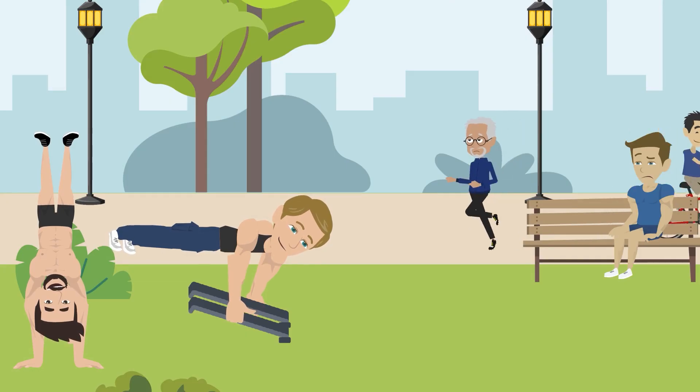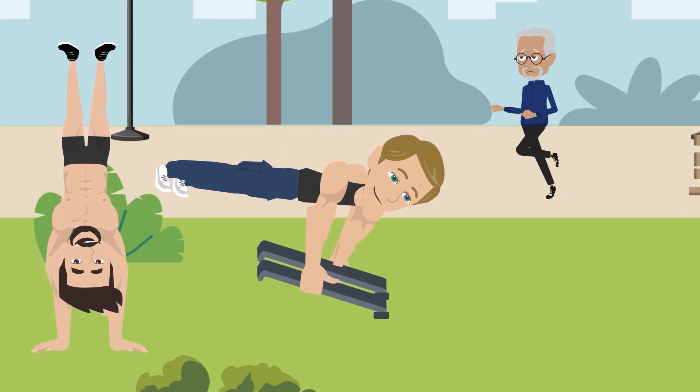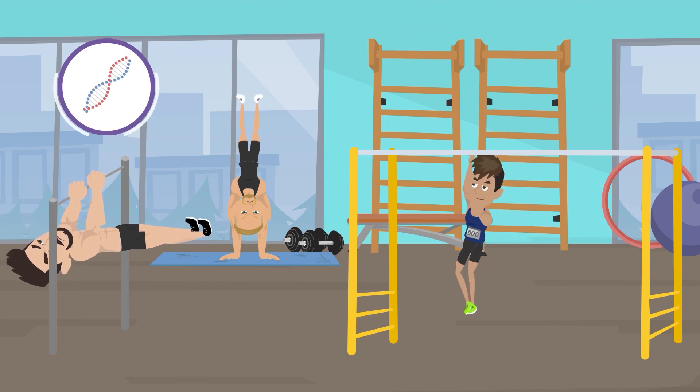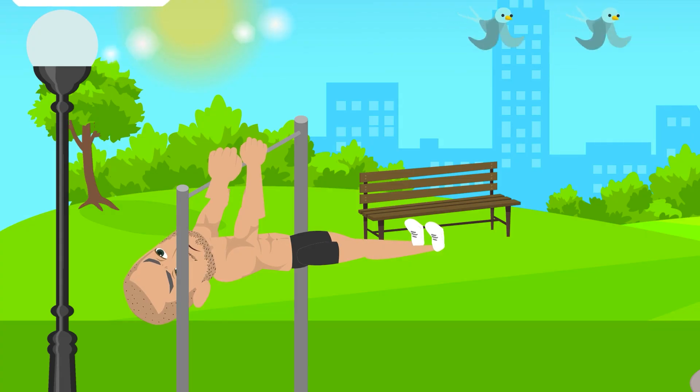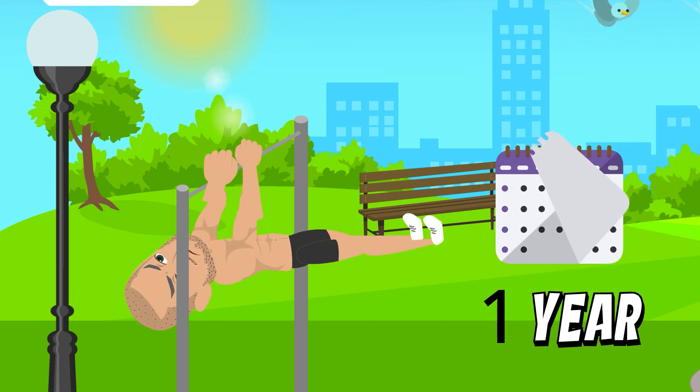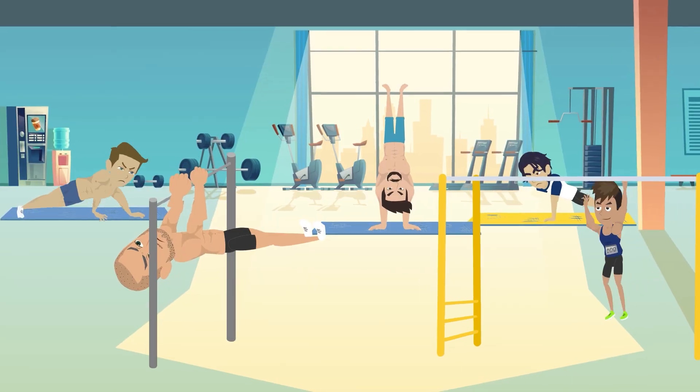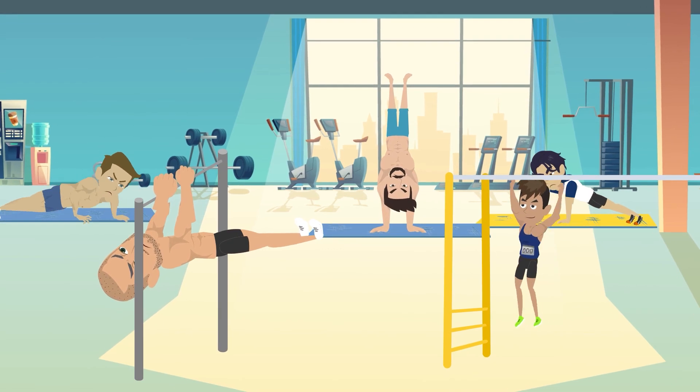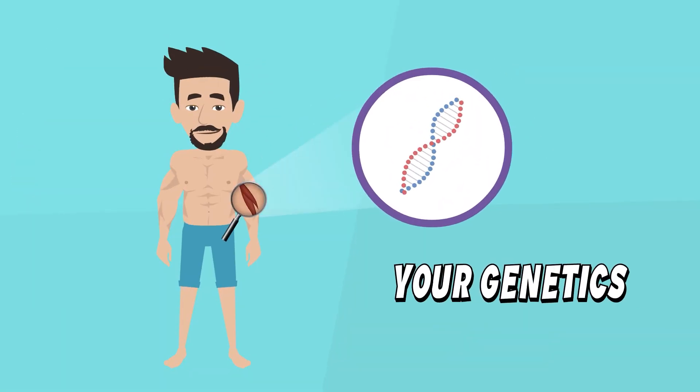And the next time you see someone doing a perfect planche or handstand, just consider their genetics and workout background. Advanced calisthenics elements like the front lever can take up to one year of hard training on average. Now, the time frame for learning a calisthenics skill depends on your genetics and your fitness background.